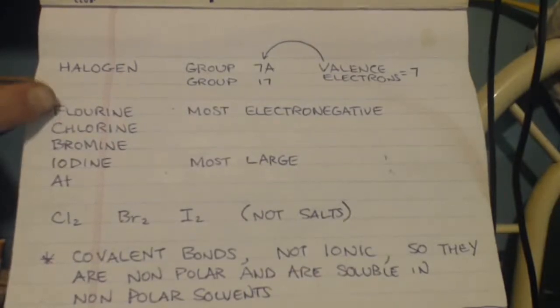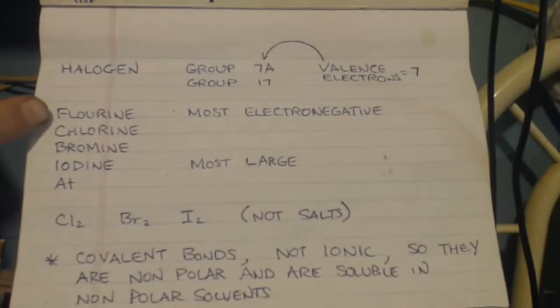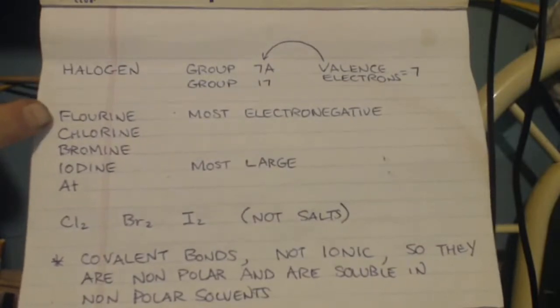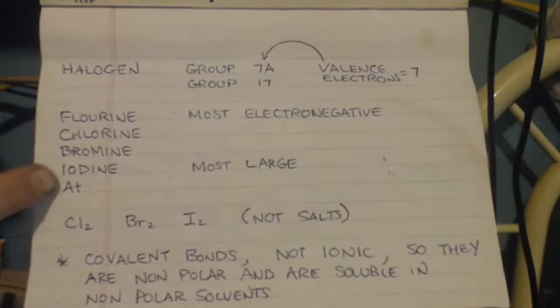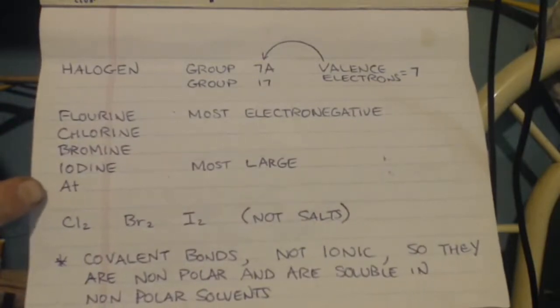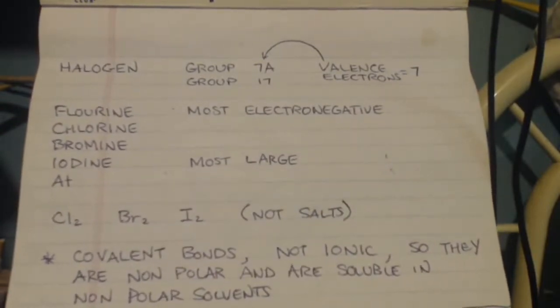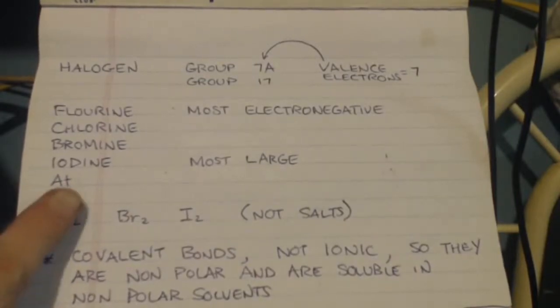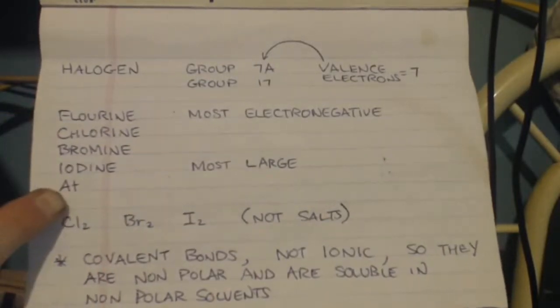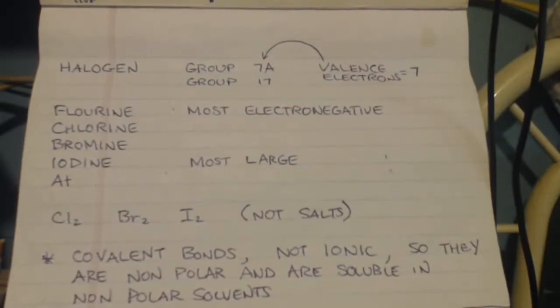So anyways, here's the list of that group, the halogens. It starts out with fluorine, chlorine, bromine, iodine or iodine, and whatever AT, whatever that represents. It's probably radioactive. Fluorine and the AT chemistry, you really don't deal with it that much. It's mainly chlorine, bromine, and iodine.